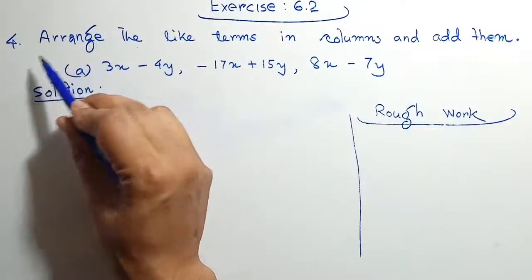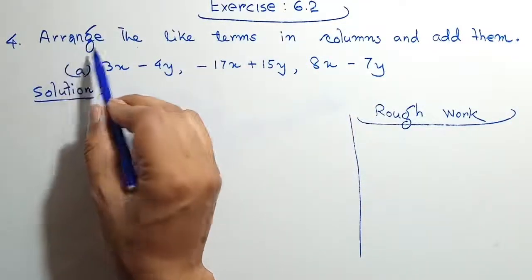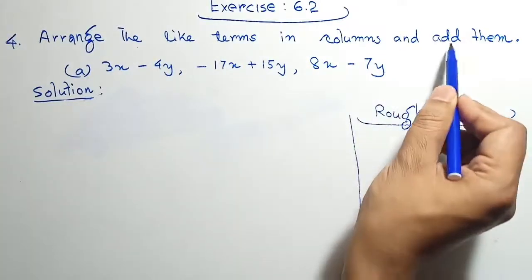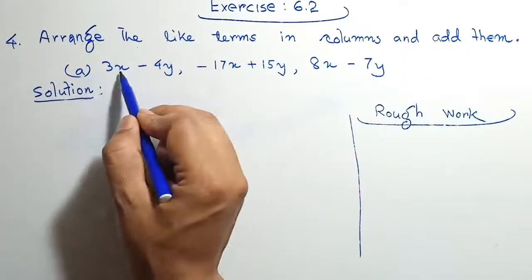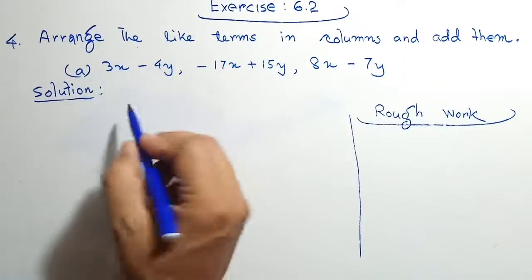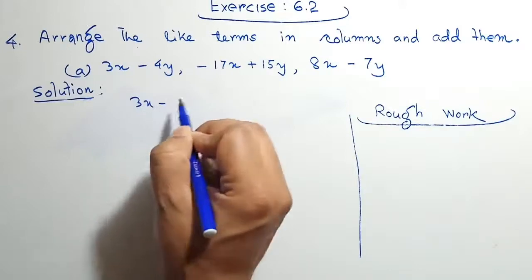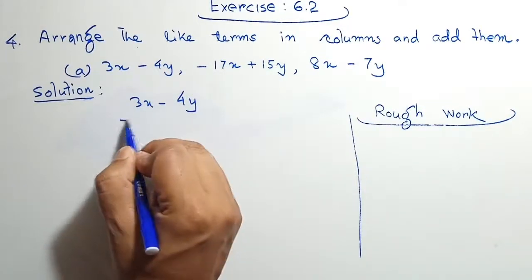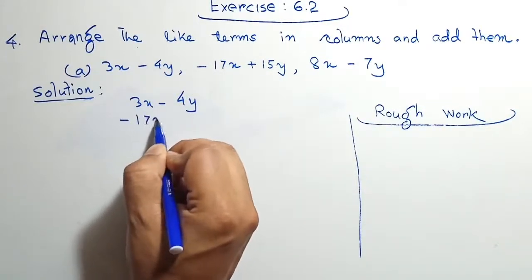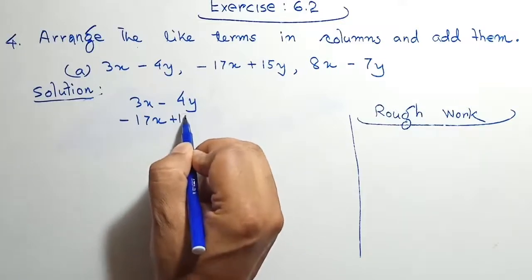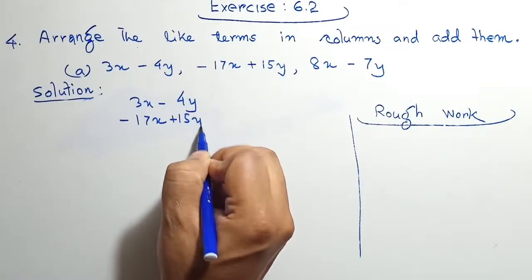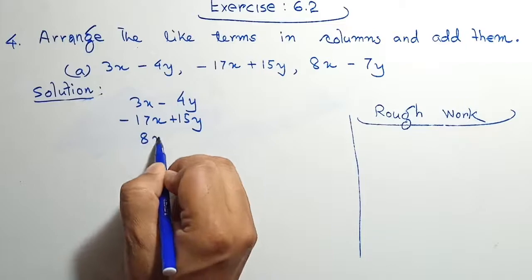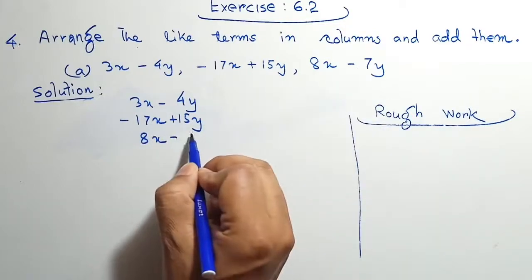XSS 6.2, Question 4. Arrange the like terms in columns and add them. Question A: 3x minus 4y minus 17x plus 15y plus 8x minus 7y.